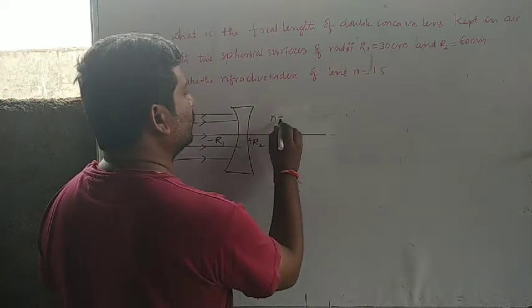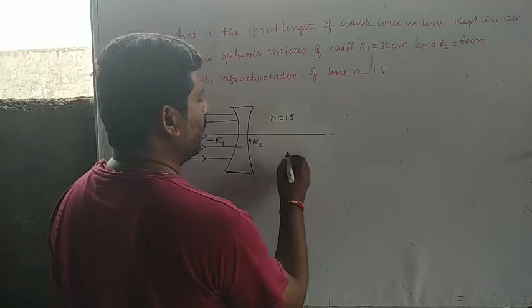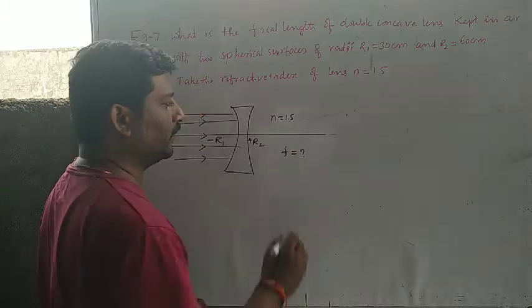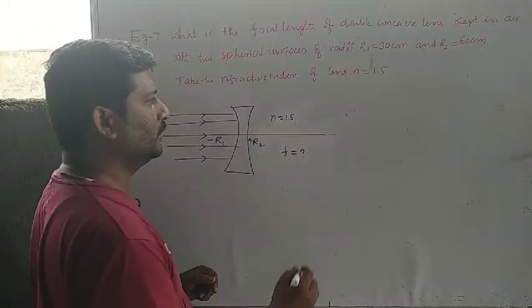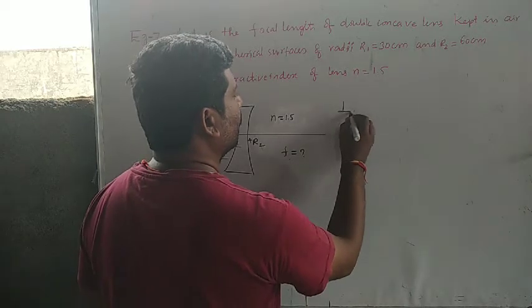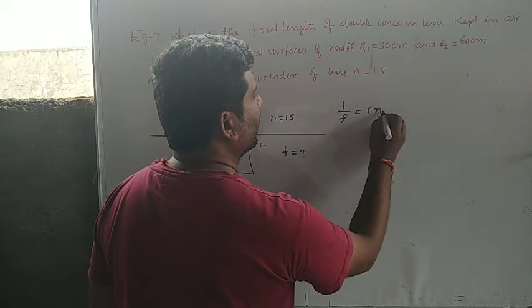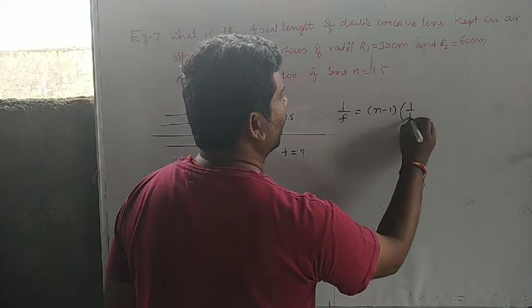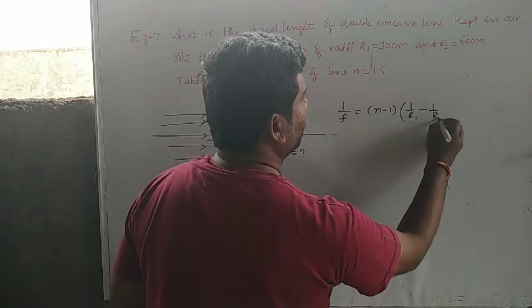He has given n equals 1.5. Our aim is to find the focal length of the lens. So we have the lens maker formula: 1 by f equals n minus 1 times 1 by R1 minus 1 by R2.